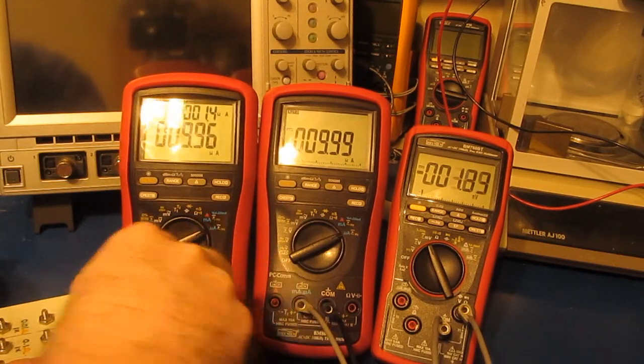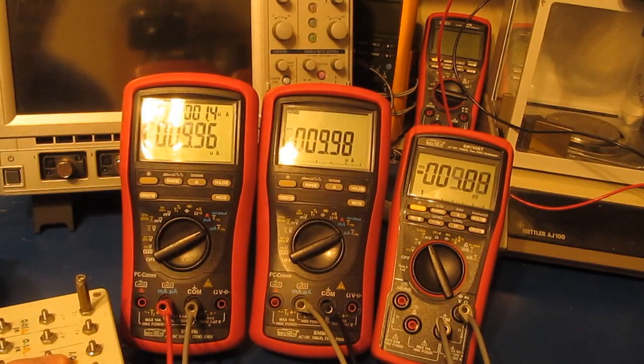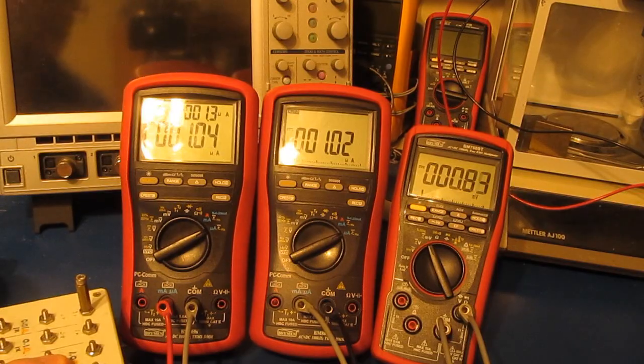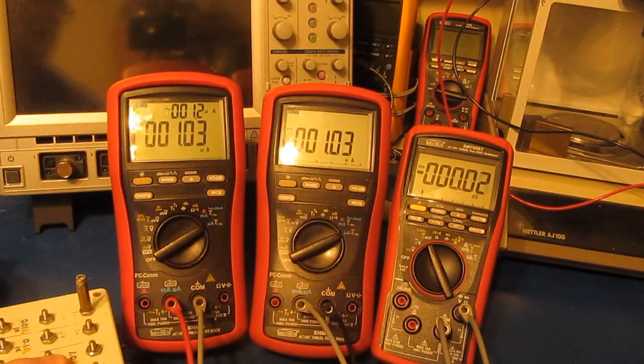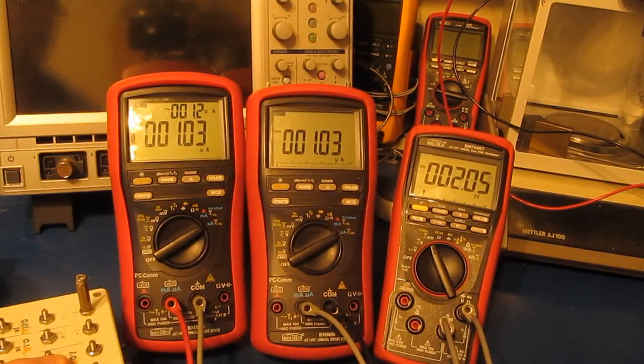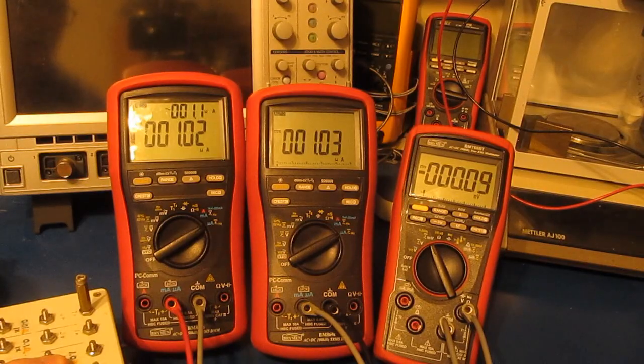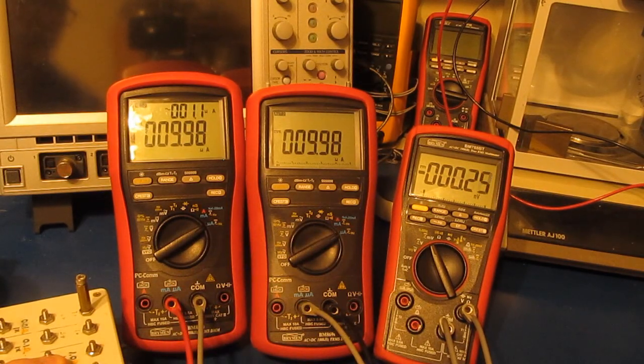10 microamps. And here we're at 1 microamp. You can see both meters are basically reading the same value. I think I had a little bit of glare on the screen, so again - here's 1 microamp, here's 10 microamps, and again here's 100 microamps.